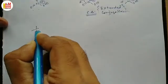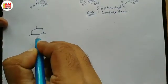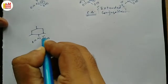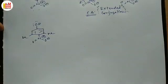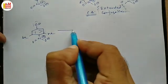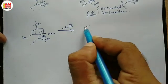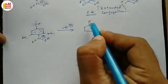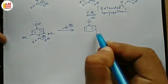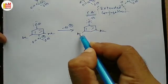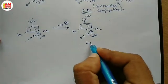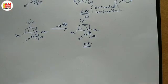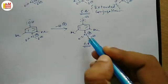Now if we consider the case of the second acid, 3,5-dimethyl-4-nitrophenol, after the release of the proton we get its conjugate base. Here there is no possibility of extended conjugation through this para nitro group. The question is: why?